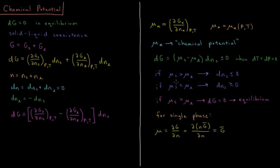This implies that particles prefer to flow from phases with high chemical potential to those with low chemical potential. The phase with the lowest chemical potential is the equilibrium phase at a given pressure and temperature. For a system with a single phase, the chemical potential is the partial derivative of the Gibbs energy with respect to the number of particles, which equals N times the molar Gibbs energy G̅, so d(NG̅)/dN = G̅. For a pure substance in a single phase, the chemical potential is simply equal to the molar Gibbs energy. Going forward, we'll use chemical potential not only for pure substances but also for mixtures, where it won't be as straightforwardly equal to the molar Gibbs energy.